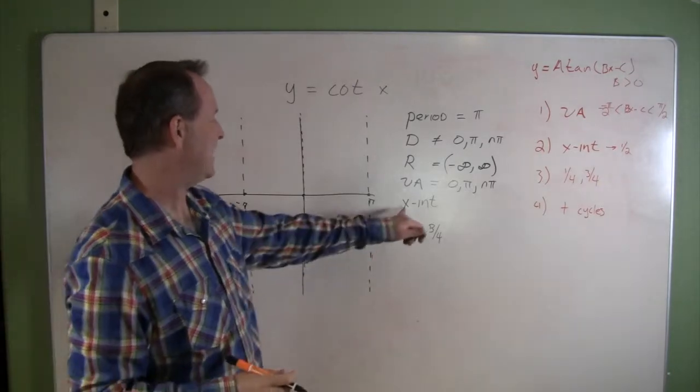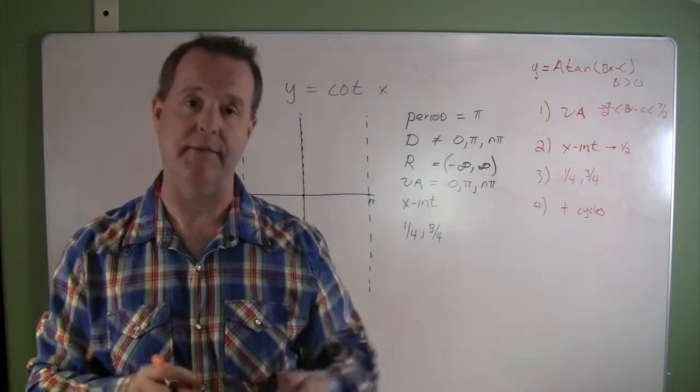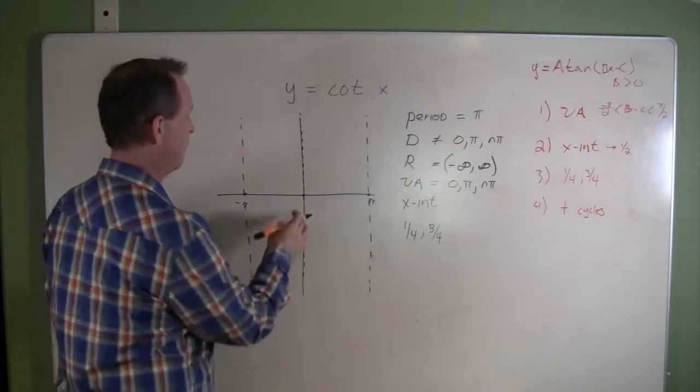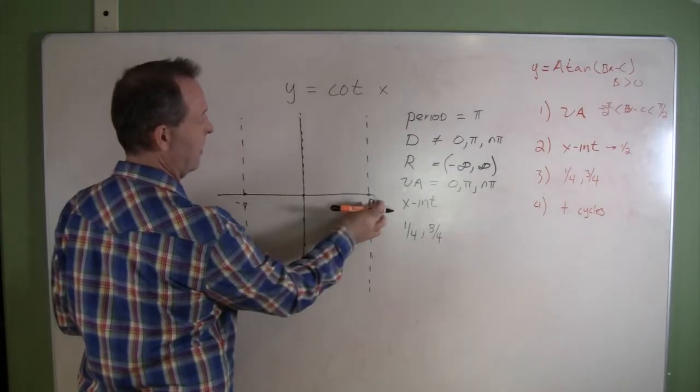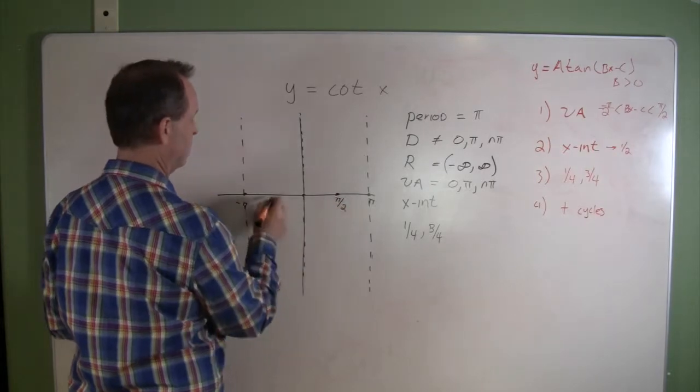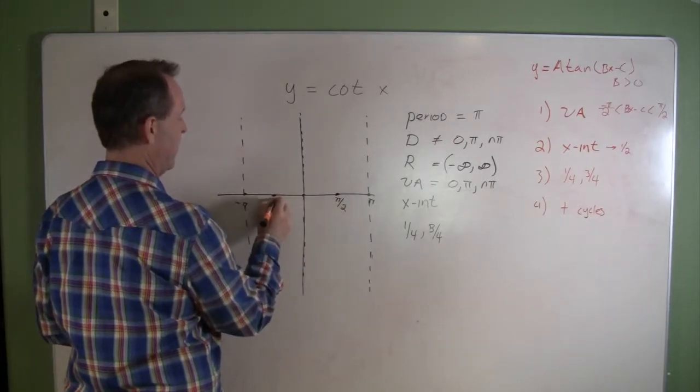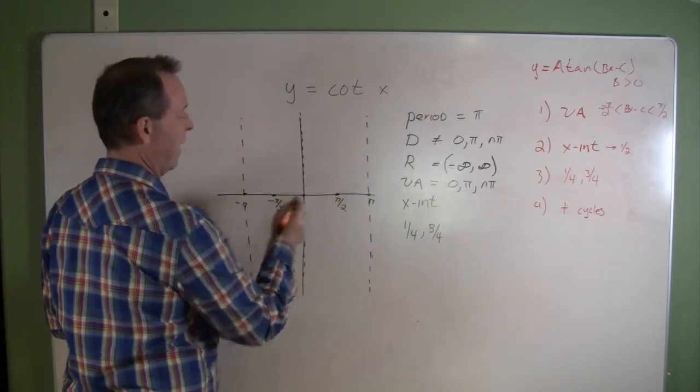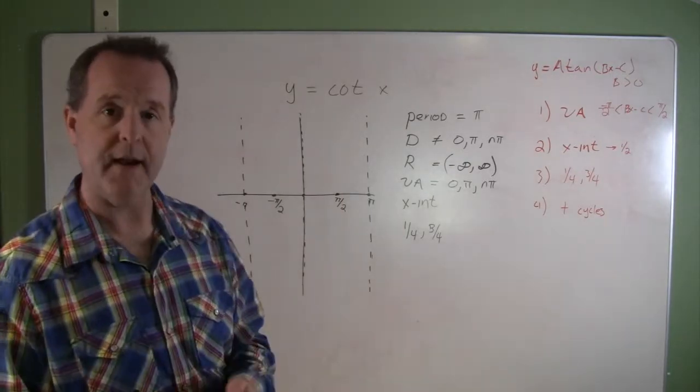Its x-intercept is halfway between the vertical asymptotes. So if I have a vertical asymptote at 0 and one at π, the x-intercept is at π/2. And likewise, there's going to be one at negative π/2. So we know the graph is going to cross right there—that's where its x-intercept is, halfway between the two.